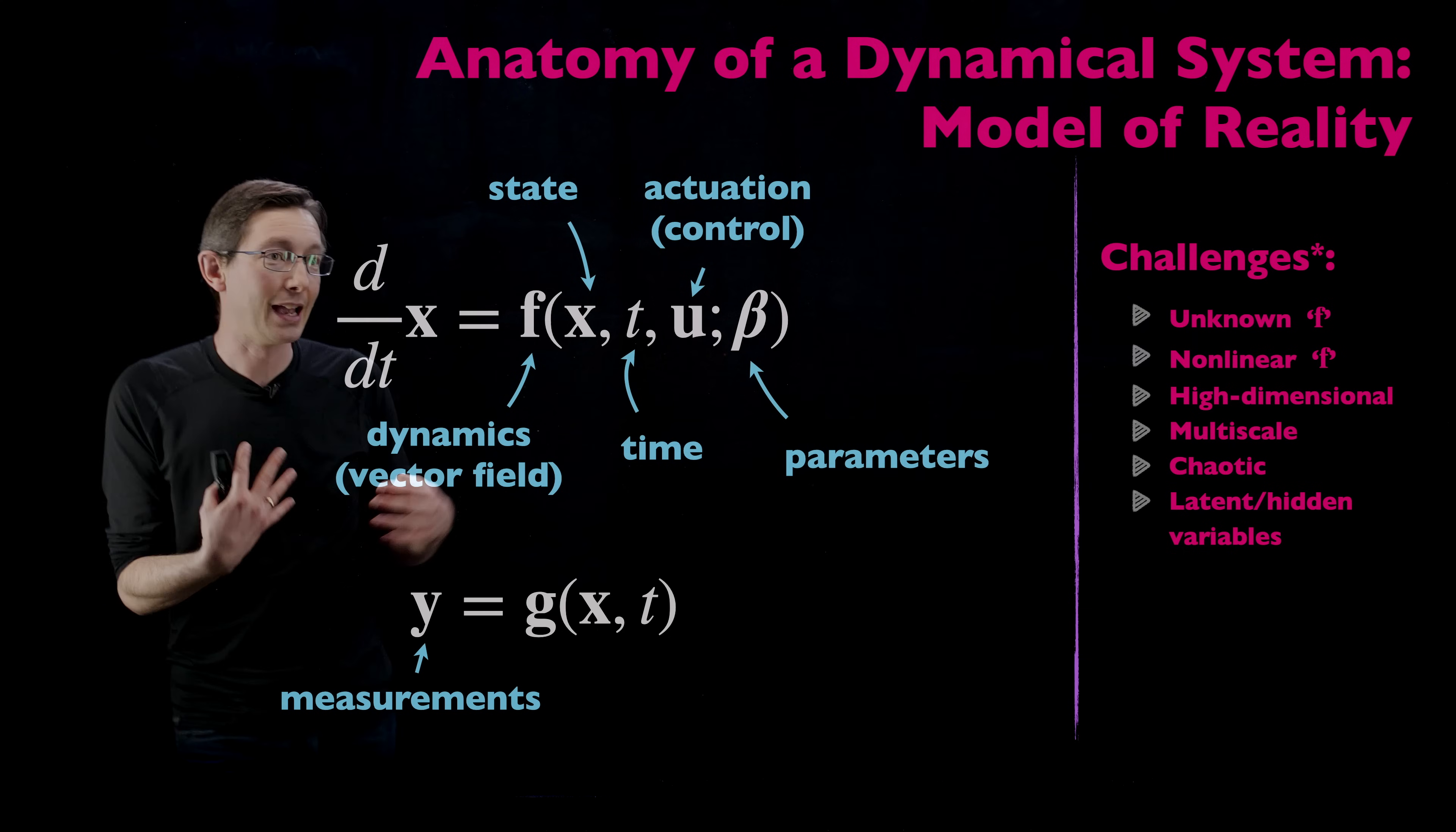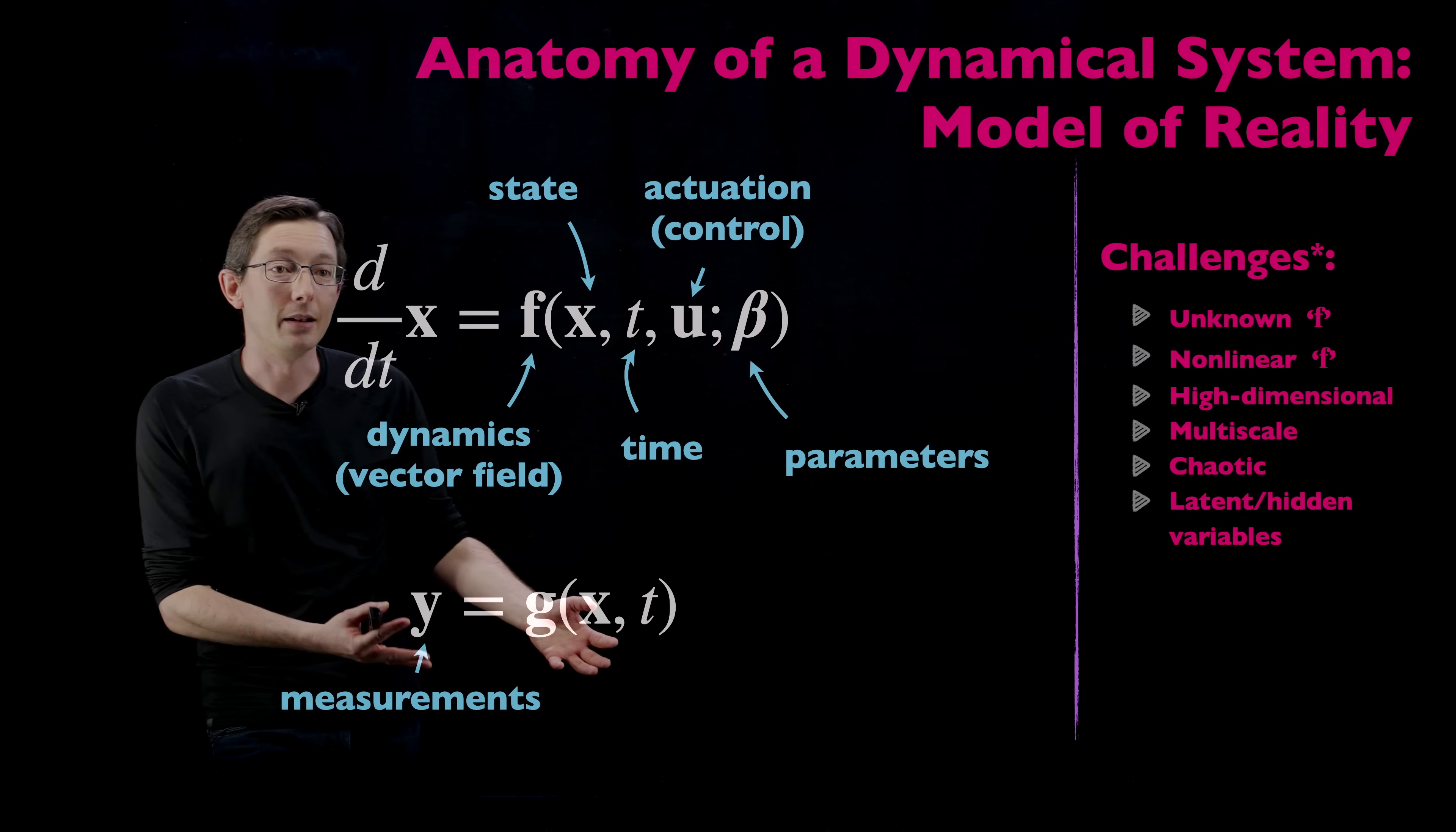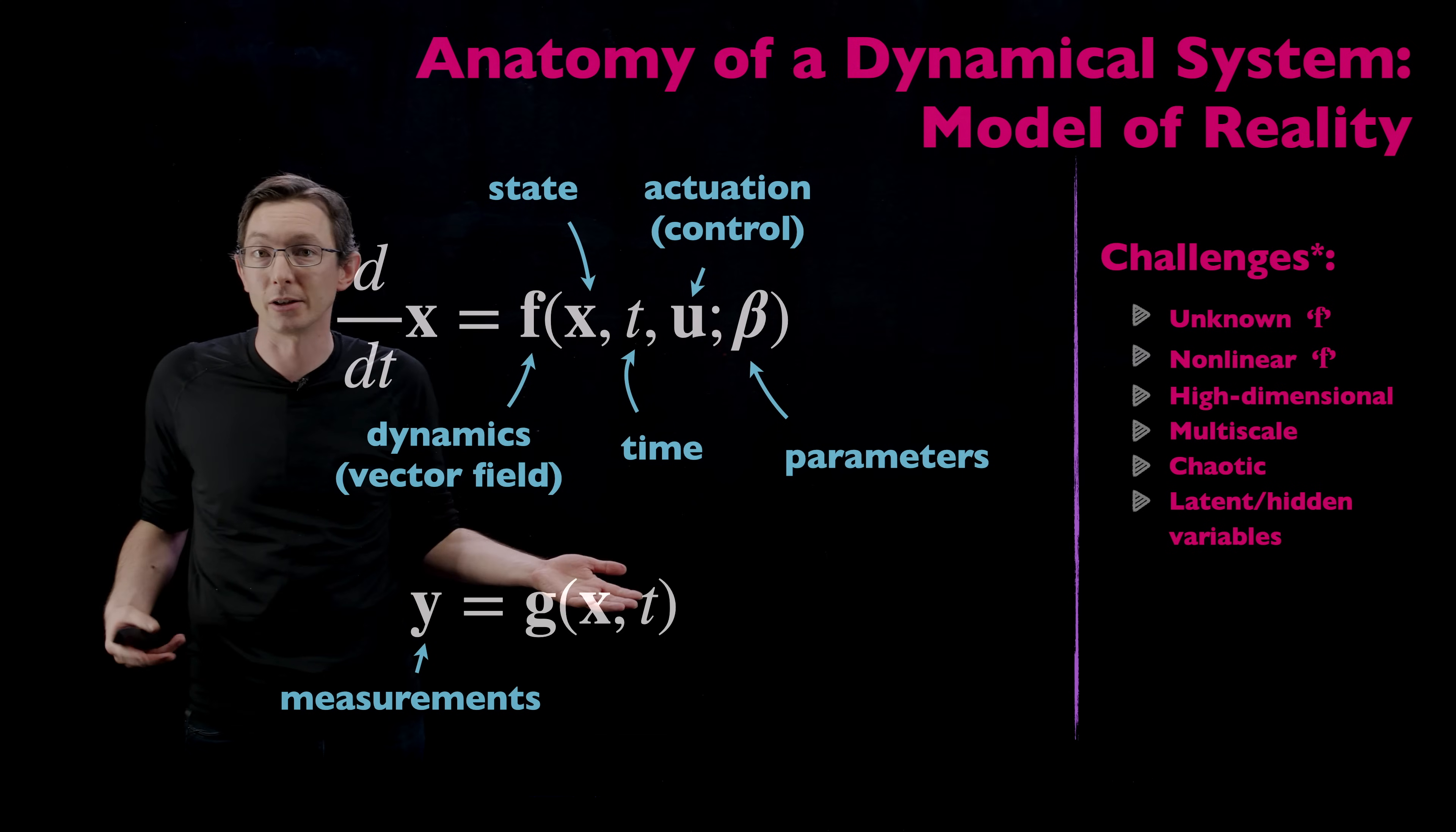Latent variables, hidden variables, again this is related to dimensionality. If I have a big state vector chances are I'm not measuring everything. You can't measure all of the neurons in your brain. You might only measure a few of them. You might only have a proxy measurement. So latent variables, hidden variables is a big deal. They might matter a lot and you can't measure them.